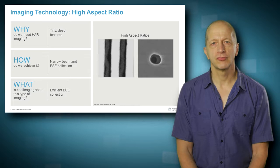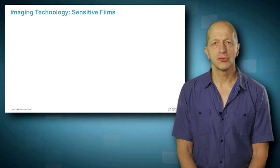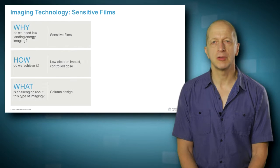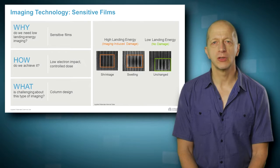In combination with an efficient BSE collection, these features can be imaged as shown in the images on the right. For applications involving sensitive films such as resist which can be damaged by high landing energies, a good column needs to be able to provide quality imaging at low landing energy as well.